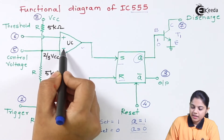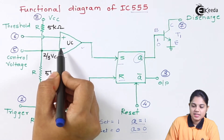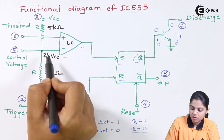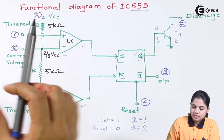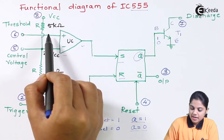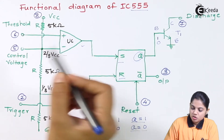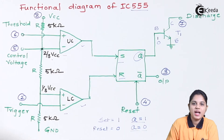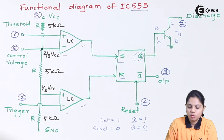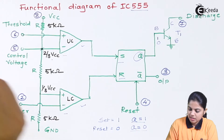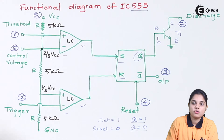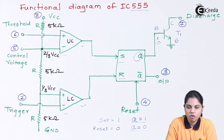The inverting terminal of the upper comparator is connected to two-thirds of VCC. VCC is applied through the resistances, so at the inverting terminal you will have a voltage equal to two-thirds of VCC. At the non-inverting terminal of the lower comparator, the voltage is equal to one-third of VCC.